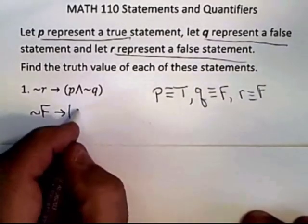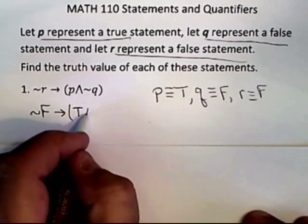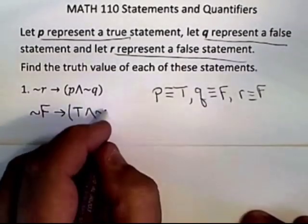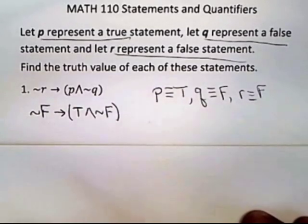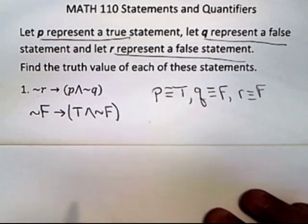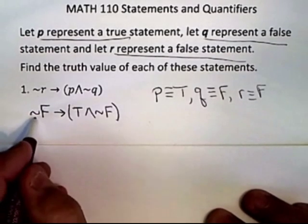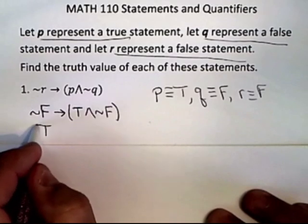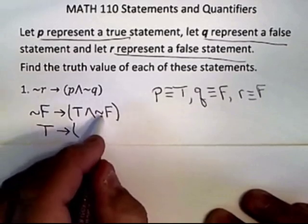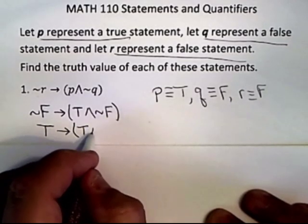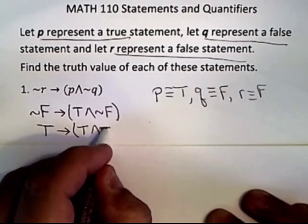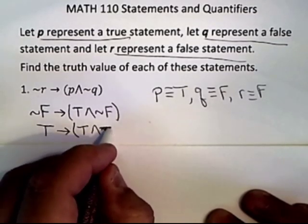And then for p, I'll actually put in the truth value, TRUE, AND, NOT, and again, q is FALSE. So I've actually inserted the truth value in there. And then you start simplifying it. NOT FALSE is TRUE. That's what your negation truth table tells you. And also NOT FALSE is TRUE over here as well. Is TRUE.